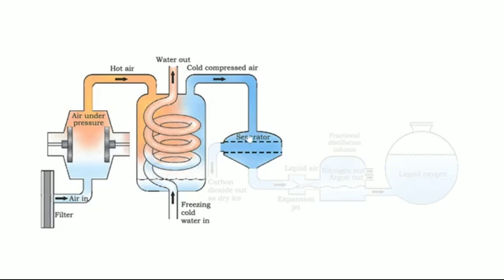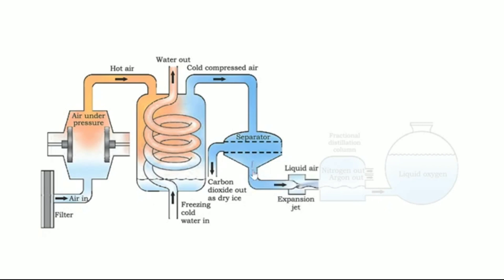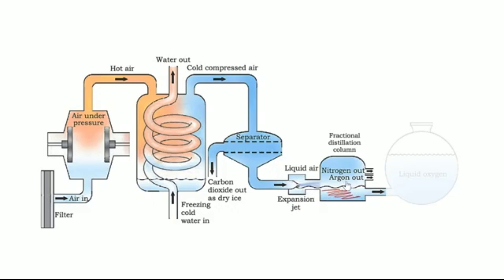In the chamber where the twisted pipes were, the temperature was 0°C. When air reaches the separator, the temperature becomes so low that it goes negative — approximately minus 70 to minus 80°C. At this temperature, carbon dioxide solidifies as dry ice and is separated. The remaining gases are allowed to pass through another chamber called the expansion jet, where further expansion lowers the temperature even more, converting all the air into liquid air, which is then passed through a fractional distillation column.